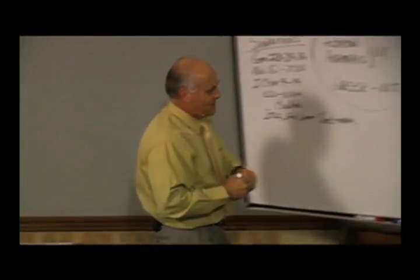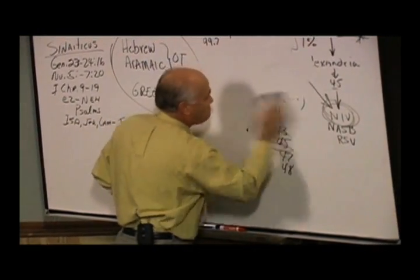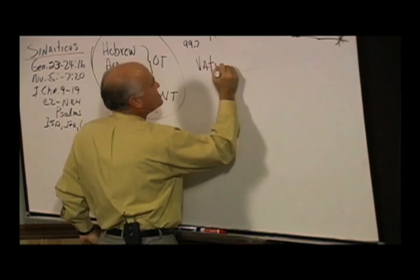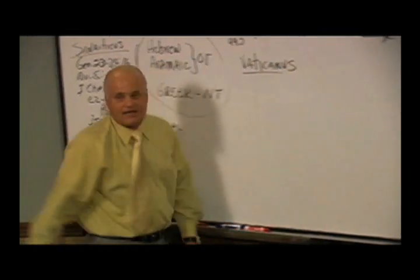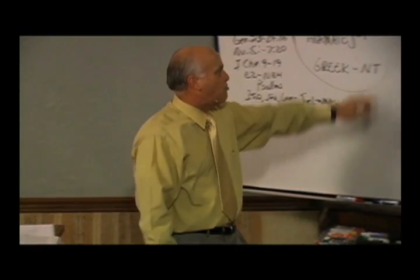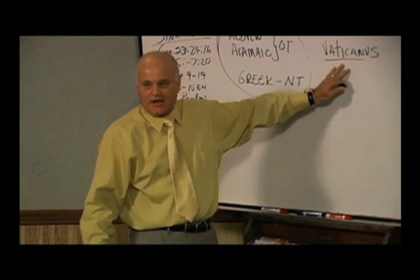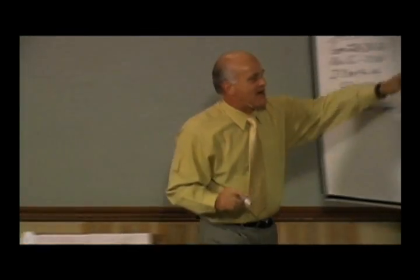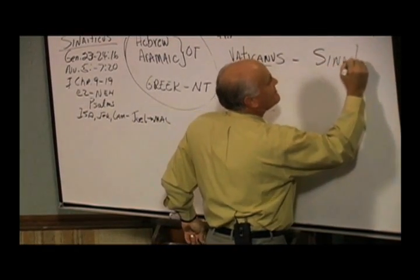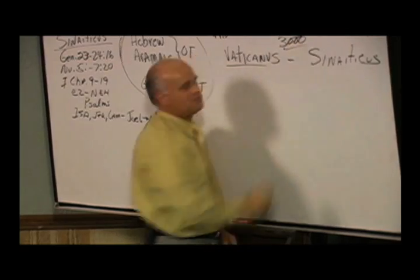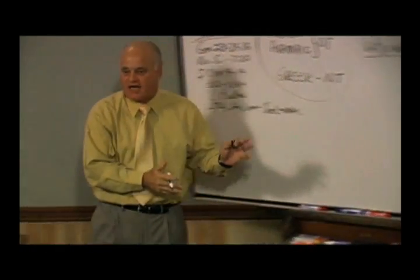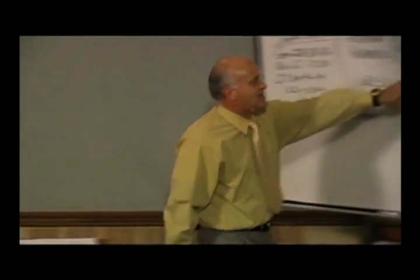The other major manuscript in the Alexandrian line is called Vaticanus. As you can see from the name, it is in the Roman library. No Protestant scholar has ever seen it with his own eyes or handled it — pictures have been taken of it and that's the only way you know what's in the Vatican manuscript. When you compare it to Sinaiticus, these two disagree in over 3,000 places. They're both in the Alexandrian line, they both differ from the majority text, and there are things missing in Vaticanus too.